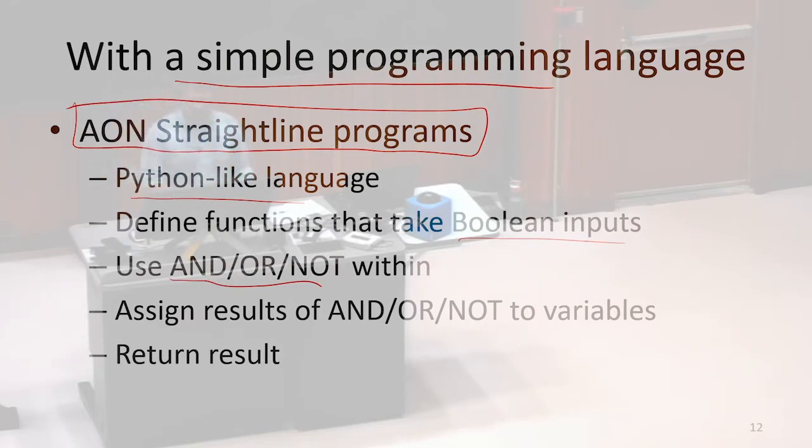What we can do is we can apply and, or, not to inputs, assign those results to variables, we can reuse those variables as inputs to future and-or-nots, and then eventually we're going to return some resulting bits.